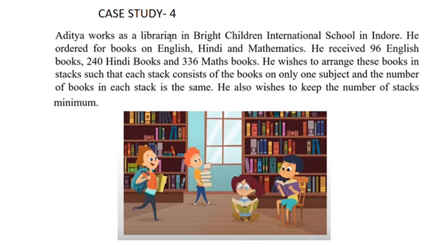So Aditya the librarian received 96 English books, 240 Hindi books, and 336 Maths books. He wants to arrange these books so that each stack has the same number of books, each stack contains books of only one subject, and the number of stacks is minimum.